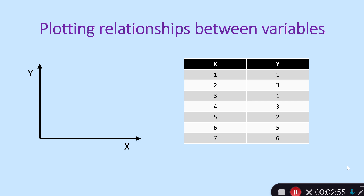Let's start from the very beginning and talk about plotting relationships between variables. What do I mean by a linear relationship and what am I talking about when I say x and y variables? We can plot data for two variables, x and y, on a set of axes — what are known as Cartesian coordinates. I've shown positive x and positive y axes, though they can continue in the negative direction too.